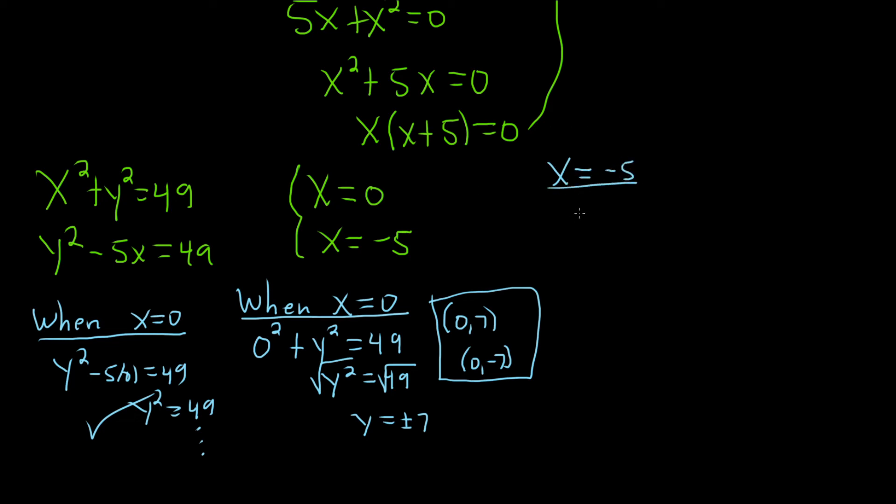Let's check when x is negative 5. Let's plug it into the first one. So we would get negative 5 squared plus y squared equals 49. So 25 plus y squared equals 49. Subtracting 25 will give us y squared equals 24. Taking the square root gives us y equals plus or minus, and then it'll be a square root of 4 times square root of 6. So it'll be y equals plus or minus 2 square root of 6.